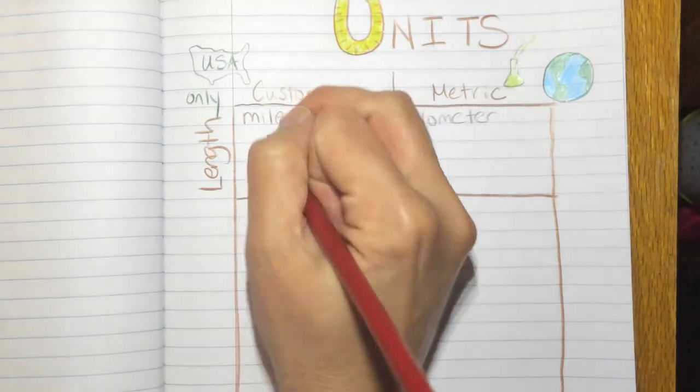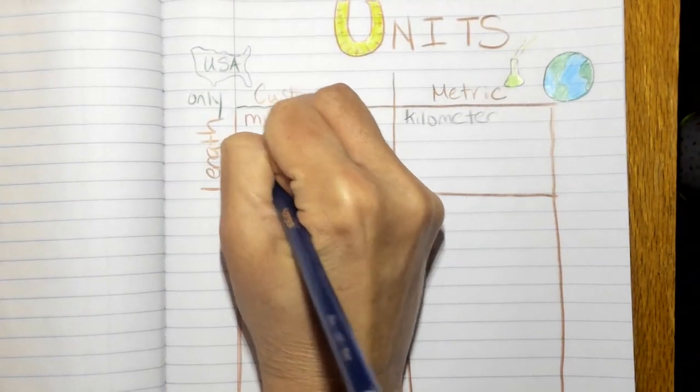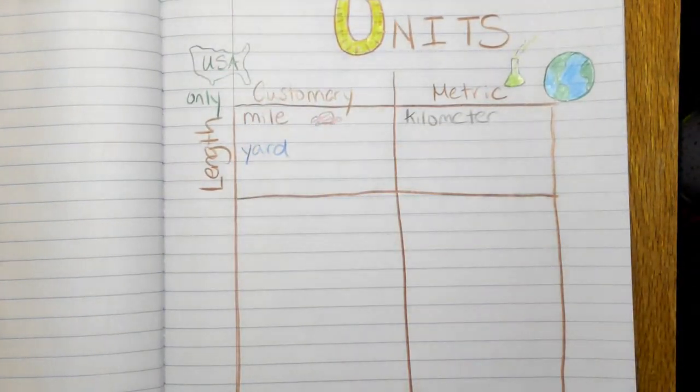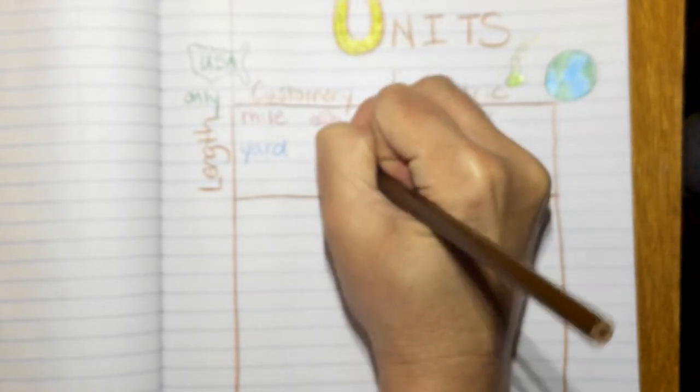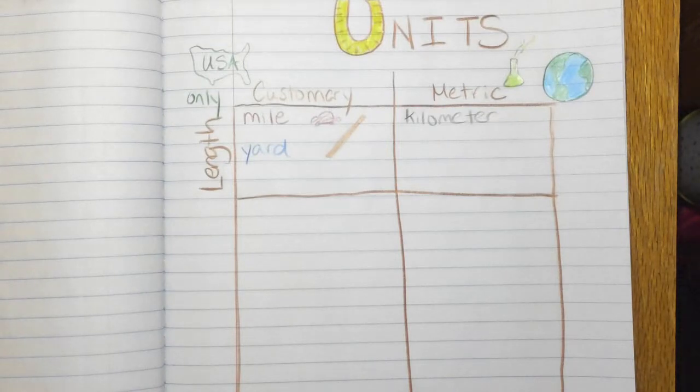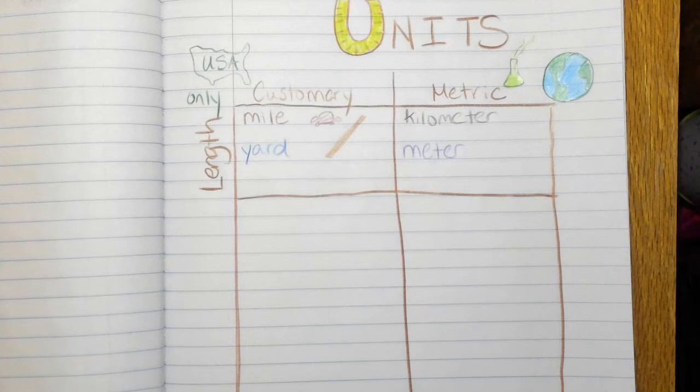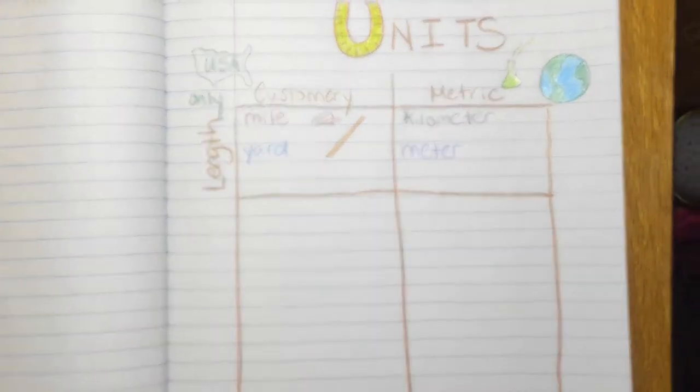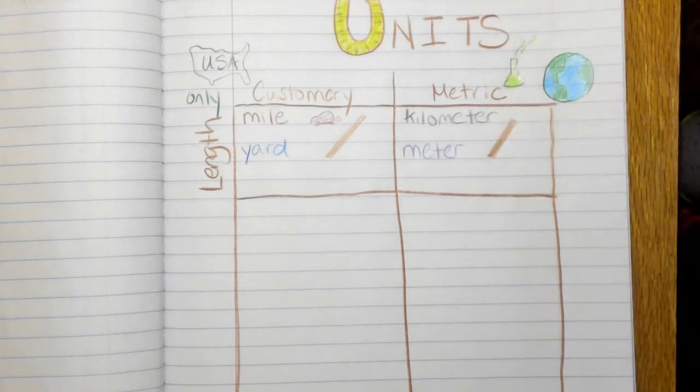The other customary unit that measures length is a yard. And a yard you want to think about seeing them in the classroom, those long yardsticks. And on the metric side we have meter. And a meter and a yard are actually pretty close to the same length. So yardsticks and meter sticks are almost exactly the same length.